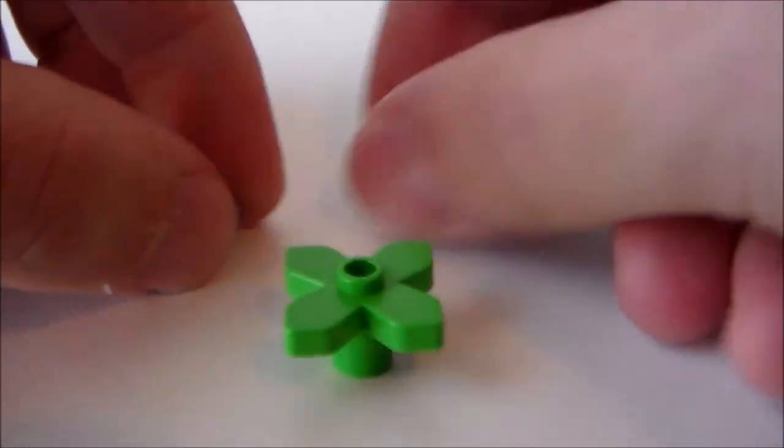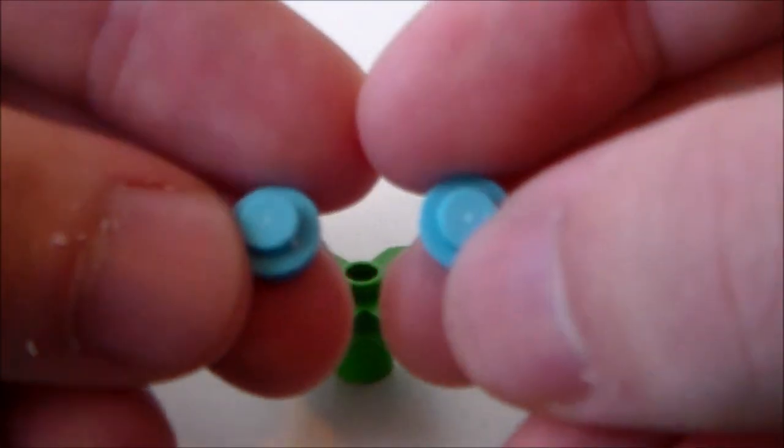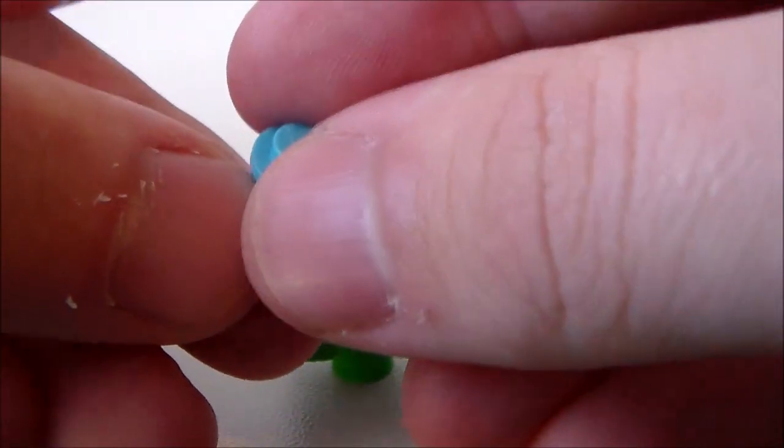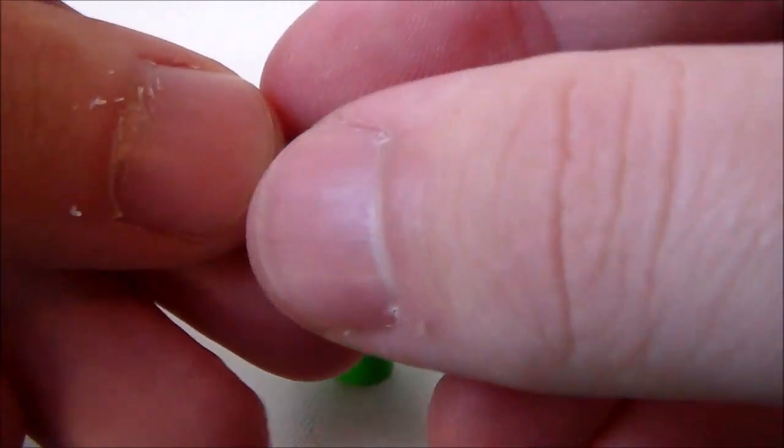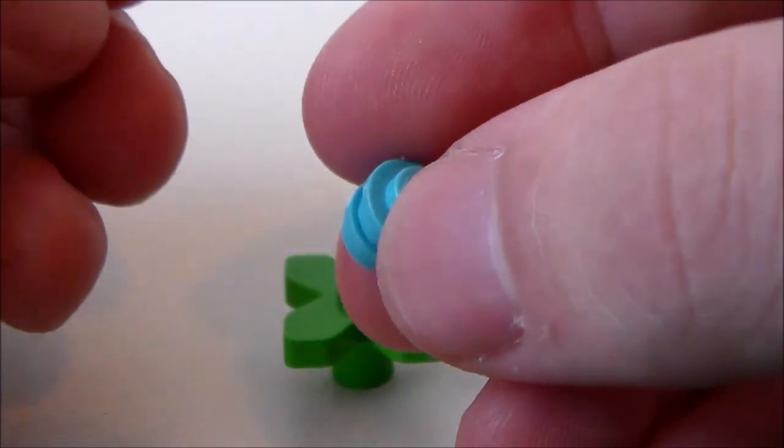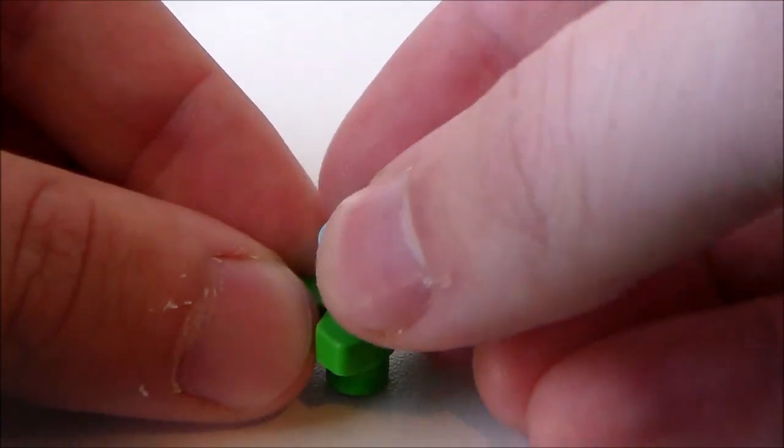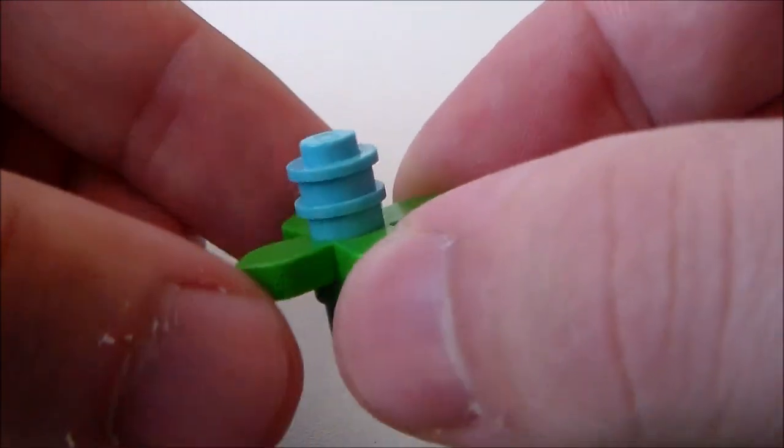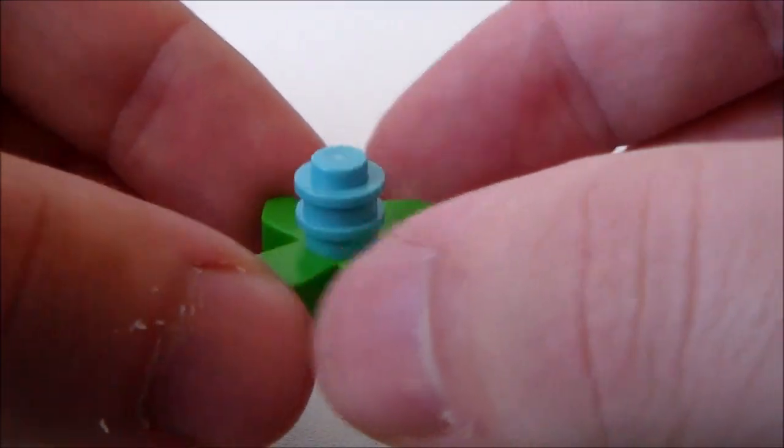And then next I'm going to get two of these light blue studs, and these are the same as the diamond color in Minecraft, so I'm going to put two of those on top of the flower brick like this, and this will be the stock for the Pitcher Plant.